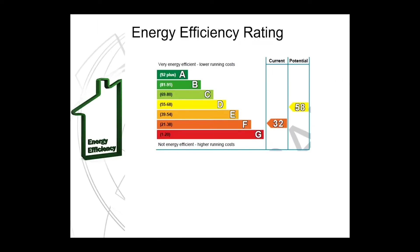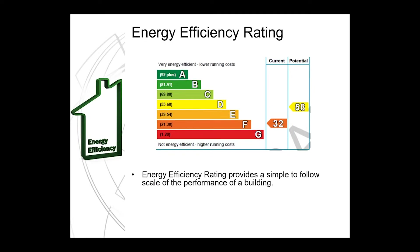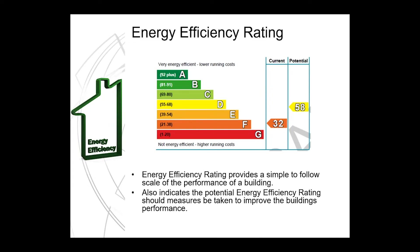As you will have seen from the front page of the EPC, this coloured chart is the energy efficiency rating, or energy performance indicator. You can see it has a chart from G up to A in green. It shows the current energy efficiency rating of the dwelling and the potential energy efficiency rating of the dwelling. The energy efficiency rating provides a simple-to-follow scale of the performance of a building, and also indicates the potential energy efficiency rating should measures be taken to improve the building's performance.